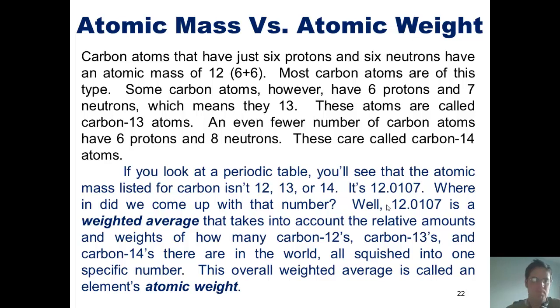So to distinguish between the two, an atom's atomic mass is how much that specific individual atom weighs. But an element's atomic weight is how much all of the atoms of that element weigh on average, taking into account the individual percentages of each of that element's isotopes, such as carbon-12, carbon-13, and carbon-14.